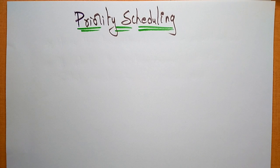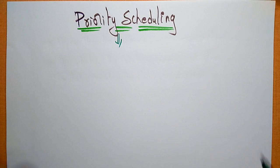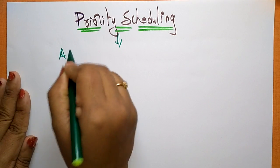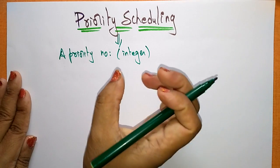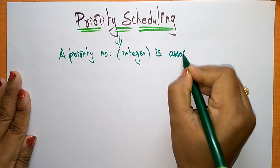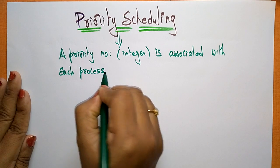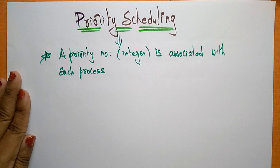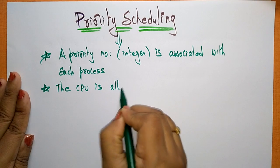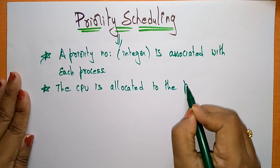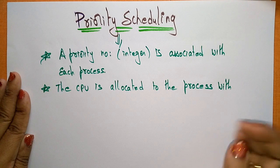Welcome to the next scheduling algorithm: the priority scheduling algorithm. The name itself says you have to select the highest priority process first. An integer priority number is associated with each process, so you have to assign a priority to each process. The CPU is then allocated to the process with the highest priority.